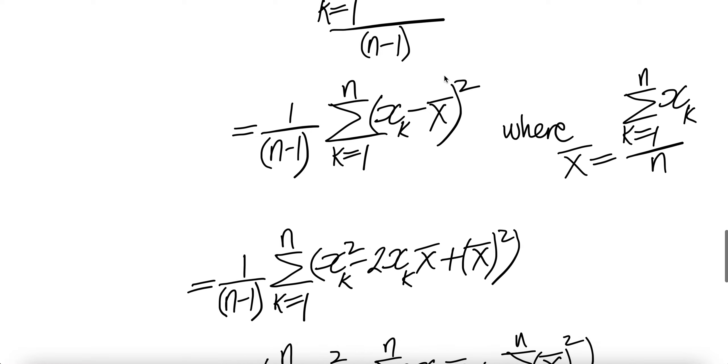Now, let us expand this. This is xk square minus twice the cross term minus 2 xk times bar x plus this square will be plus bar x square.